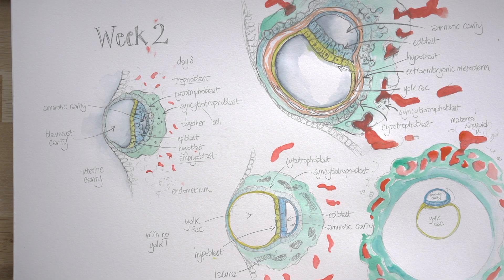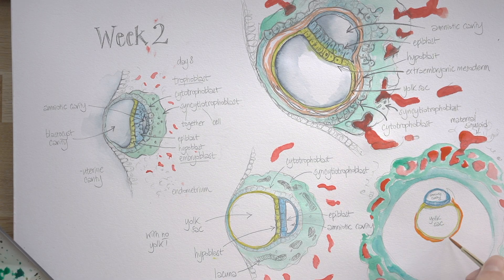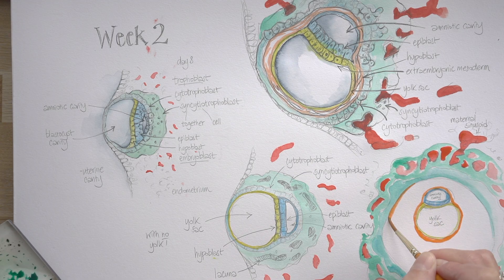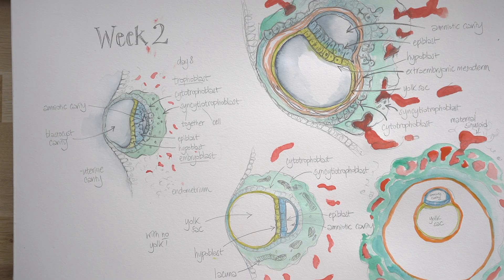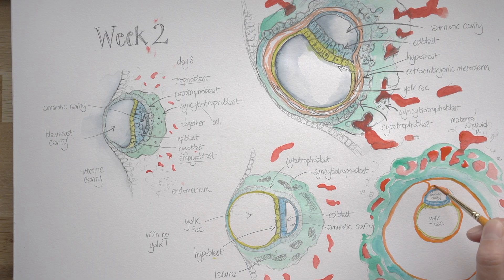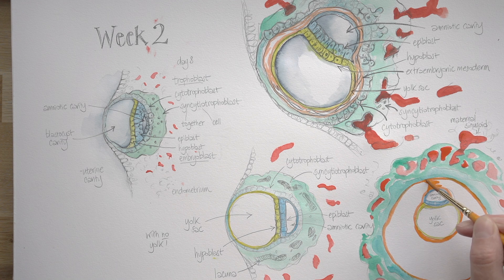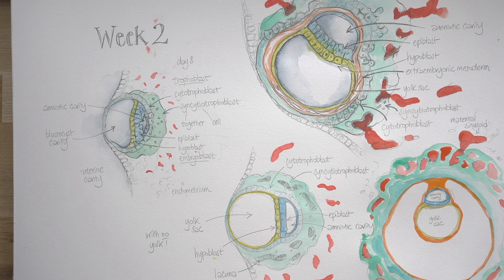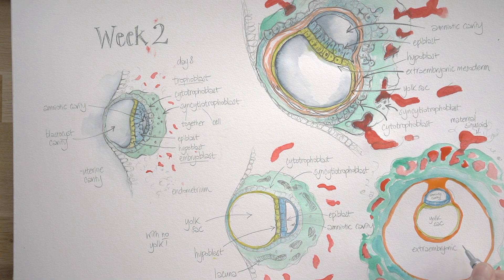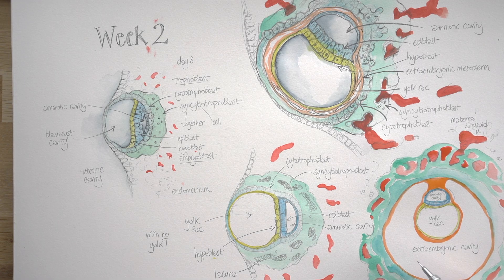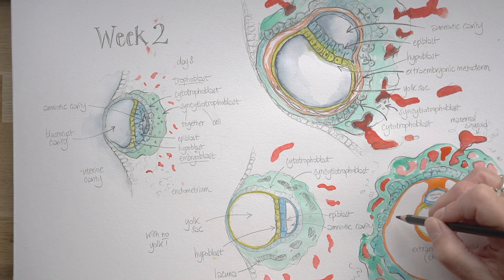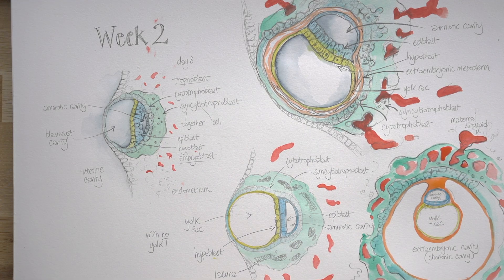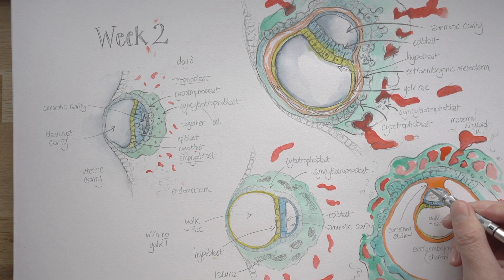They must be connected. There's no point in having that uteroplacental circulation if the embryo itself is going to be cut off from it. So it is connected, and it's connected via that new tissue layer, the extraembryonic mesoderm, which was very loose and cobwebby right from the very beginning. And now it's become even more full of holes until actually all those holes coalesce to form one big hole. And this is the extraembryonic cavity. Sometimes they call it a coelom. That's another word for a cavity. Or the chorionic cavity.